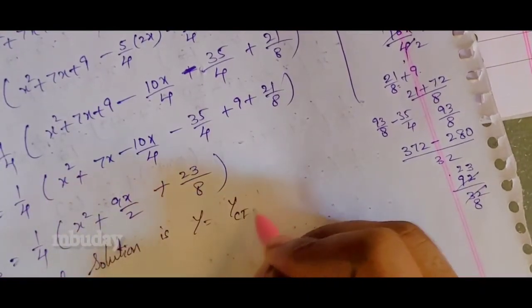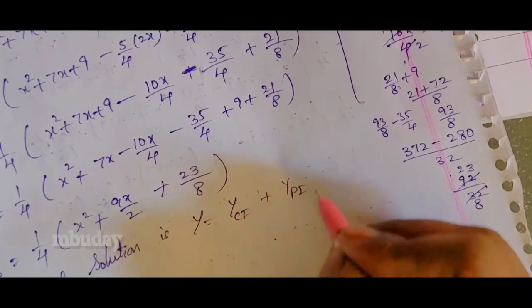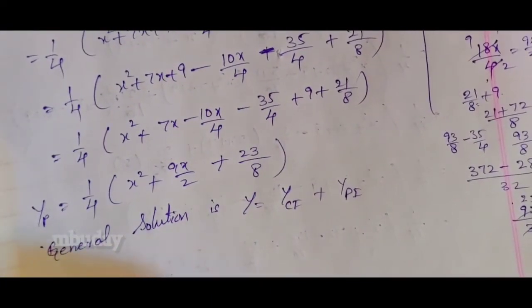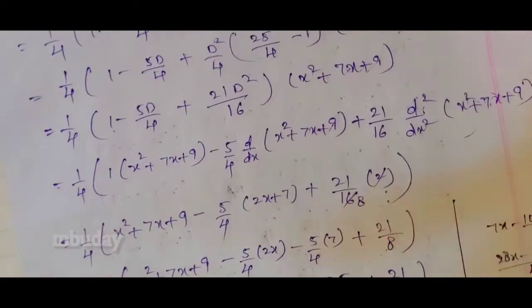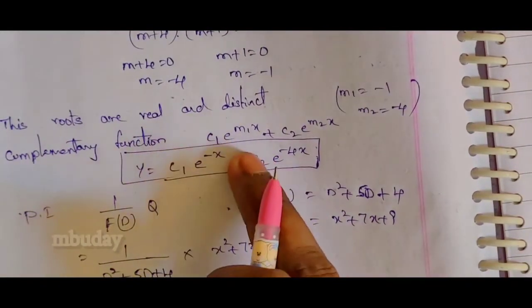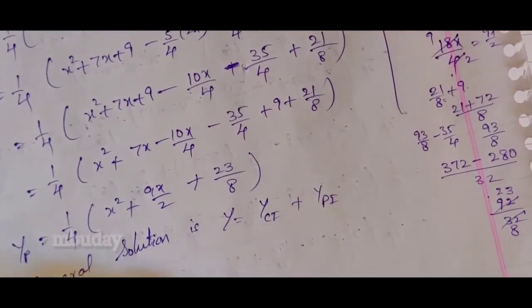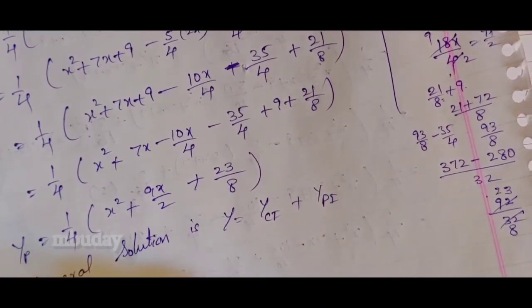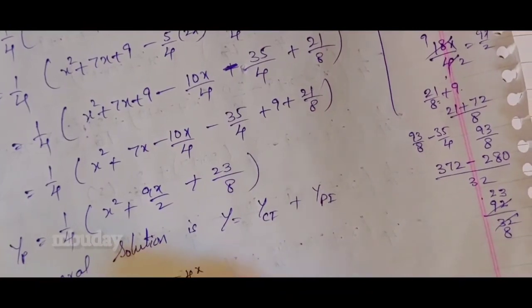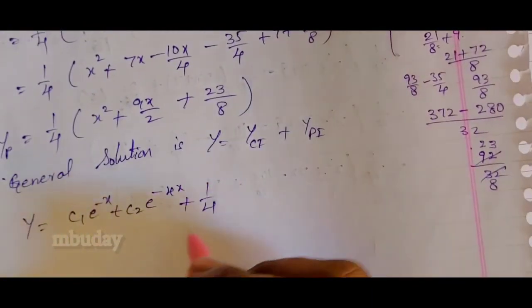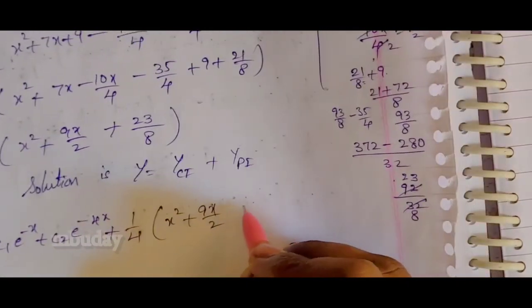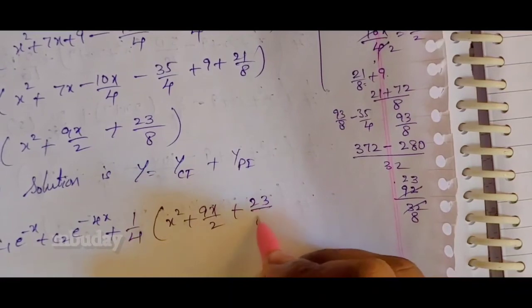The general solution is y equals the complementary function plus the particular integral: y equals C1 e to the power minus x plus C2 e to the power minus 4x plus 1 by 4 times (x squared plus 9x by 2 plus 23 by 8).